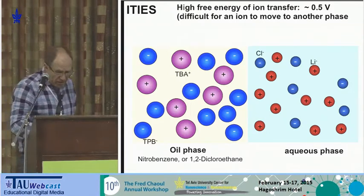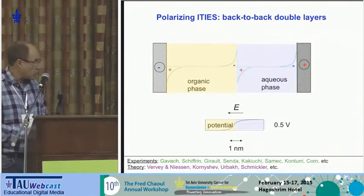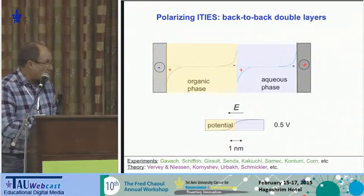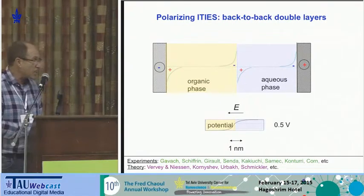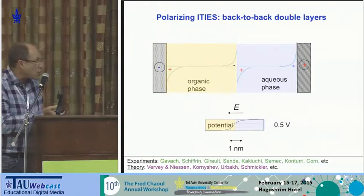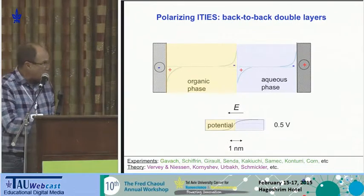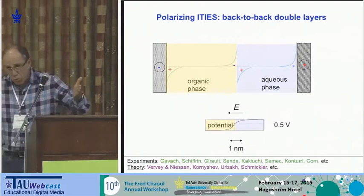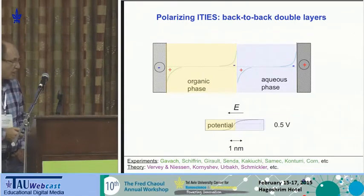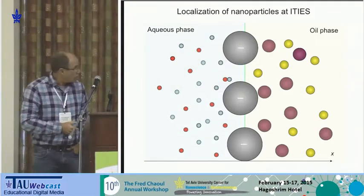You can easily apply an electric field across this interface — something like half a volt. When we apply this field, all electric field is localized in a nanometer-scale region near the interface. Outside this interfacial region, which has a thickness of the order of one nanometer, you have electroneutrality in the bulk of both phases and there is no electric field. So you can calculate that half a volt across a one-nanometer region gives you a very strong electric field.